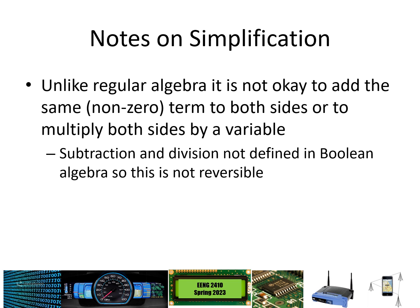Some notes on simplification: unlike regular algebra, it is not okay to add the same value to both sides or to multiply both sides by a variable. In regular algebra this works because it's reversible — if you add 3 to both sides, you can subtract 3 later. But in Boolean algebra there is no subtraction, so adding a non-zero term to both sides is a problem. Similarly, there is no division in Boolean algebra, so multiplying both sides by a variable is not a reversible process.